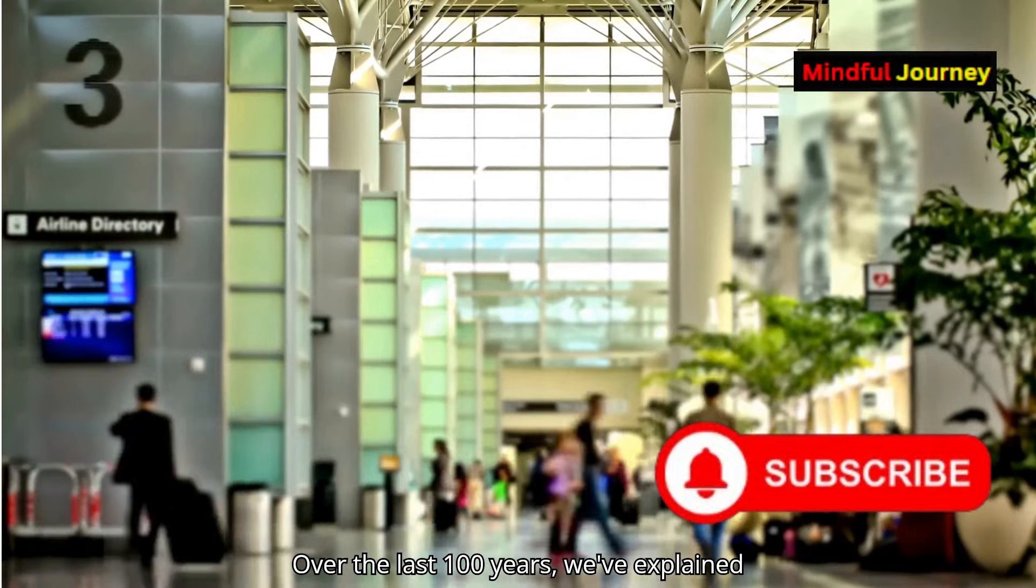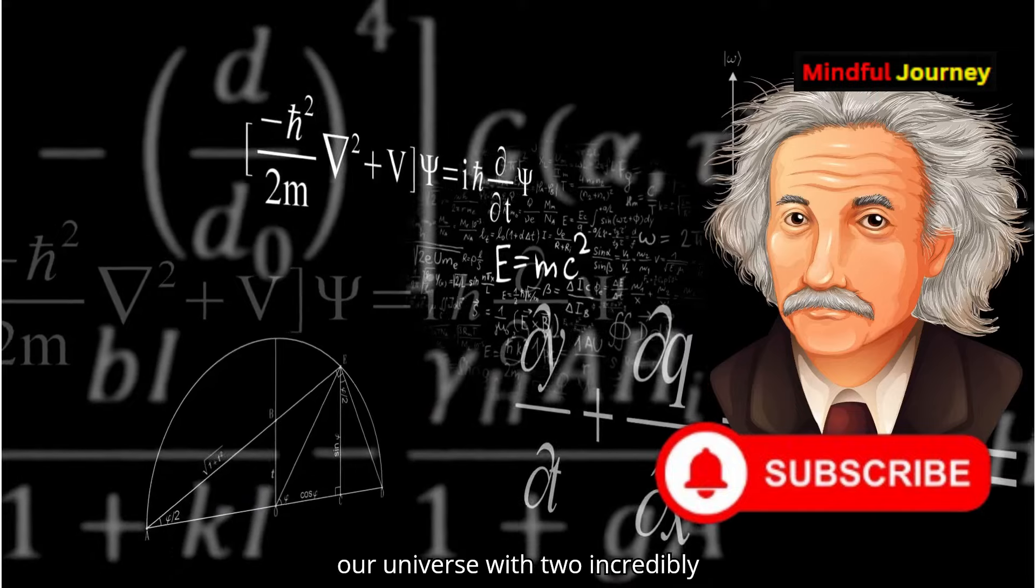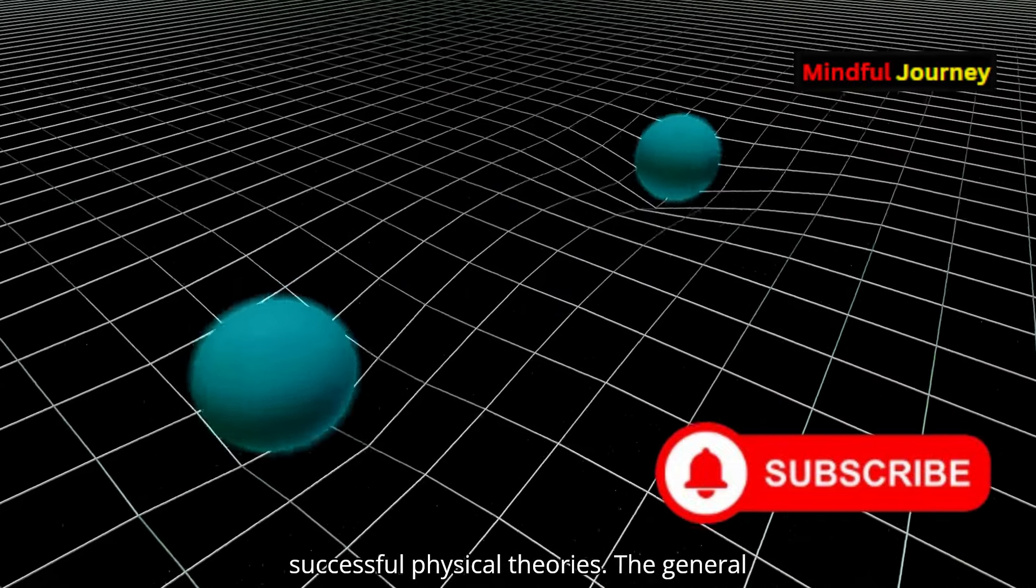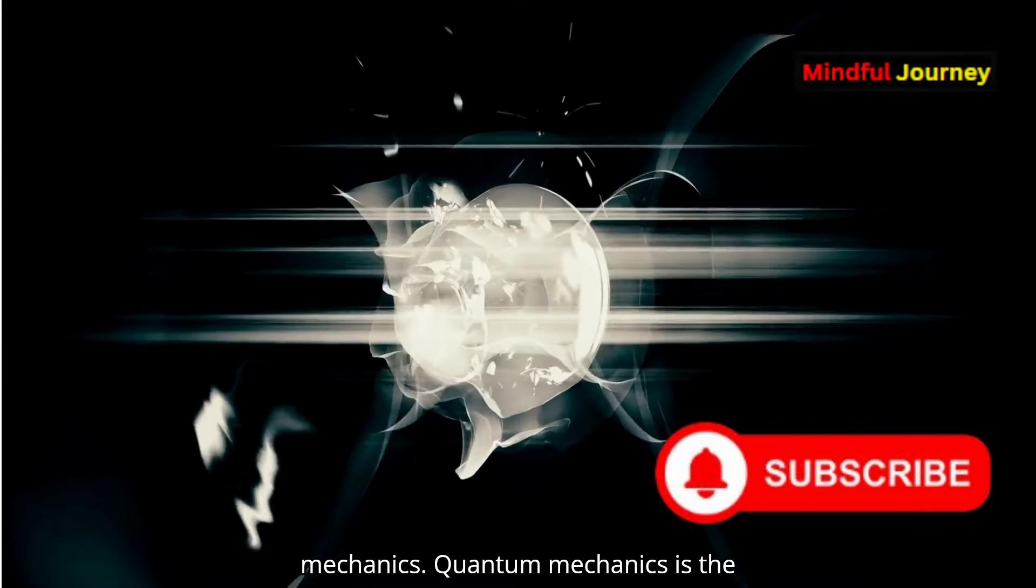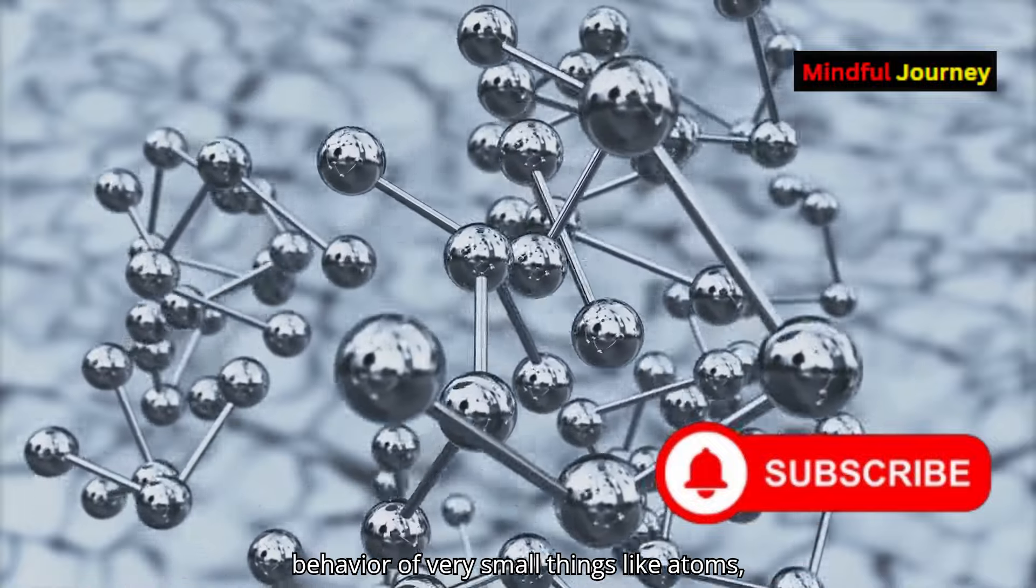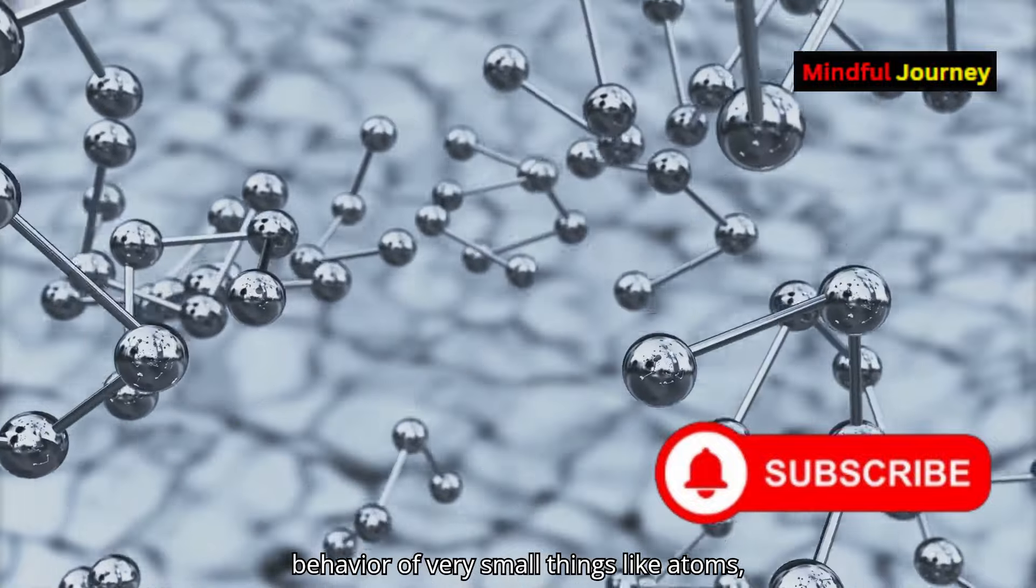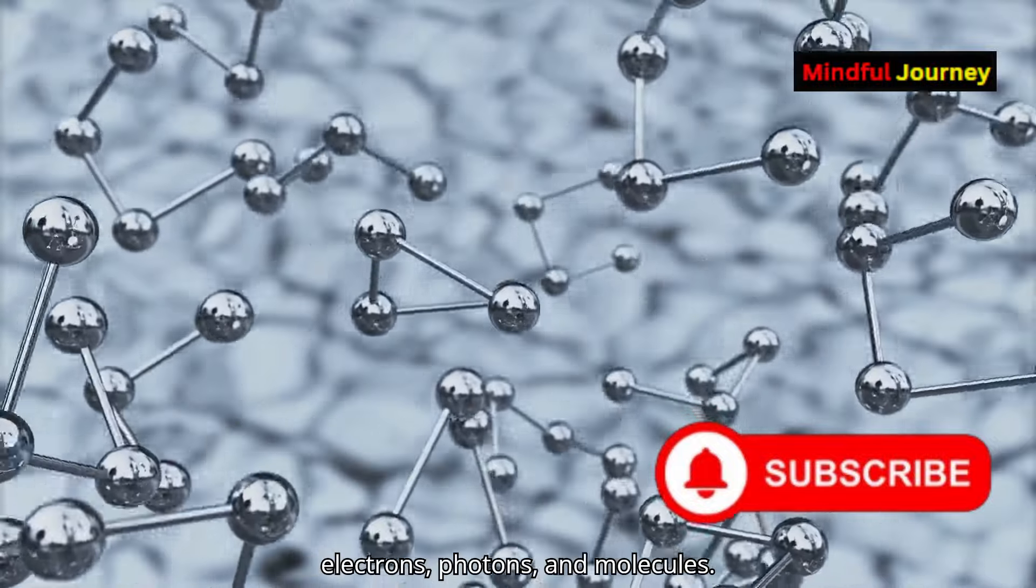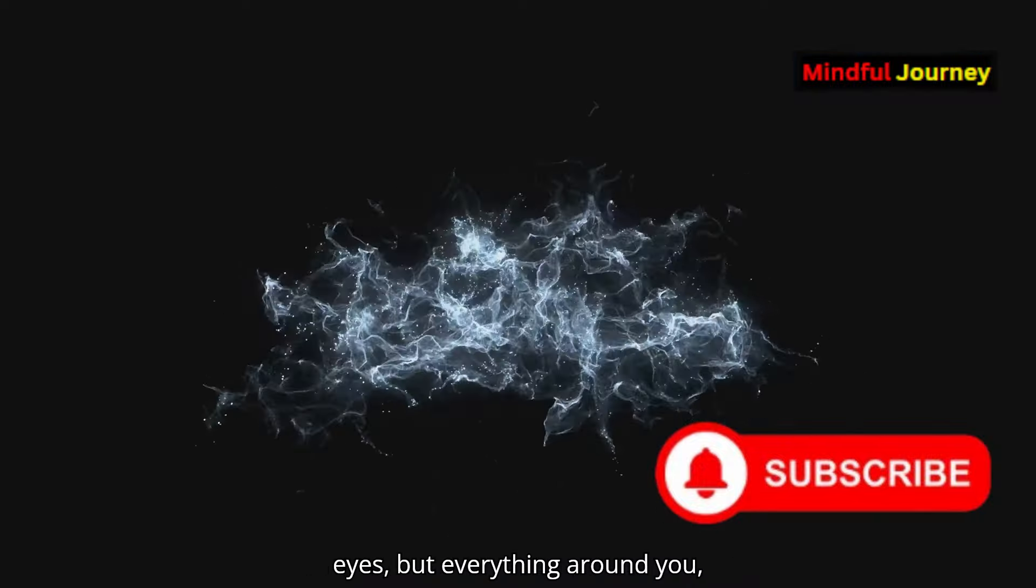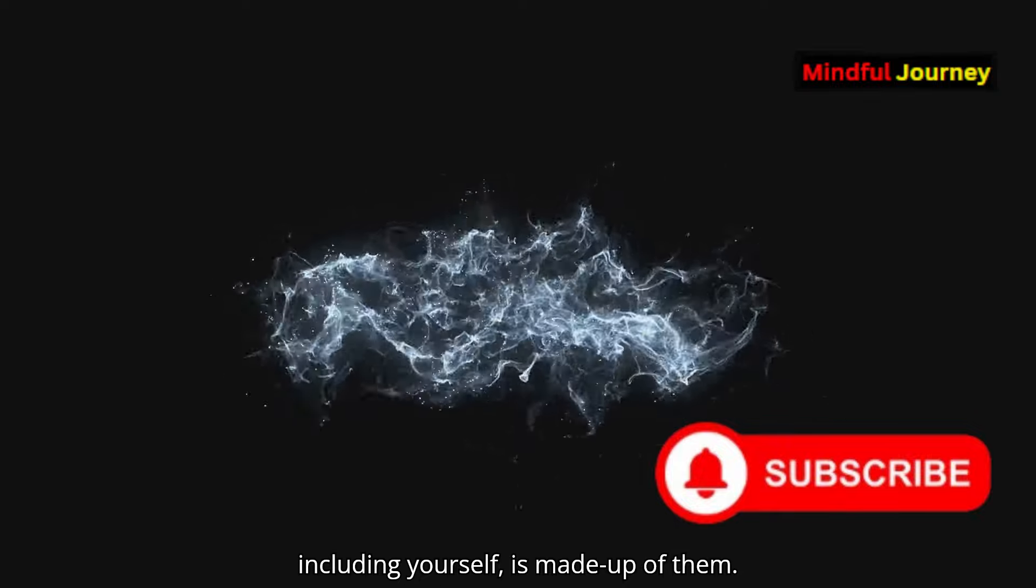Over the last 100 years, we've explained our universe with two incredibly successful physical theories: The General Theory of Relativity and Quantum Mechanics. Quantum mechanics is the branch of physics that explains the behavior of very small things, like atoms, electrons, photons and molecules. You can't see these particles with your eyes, but everything around you, including yourself, is made up of them.